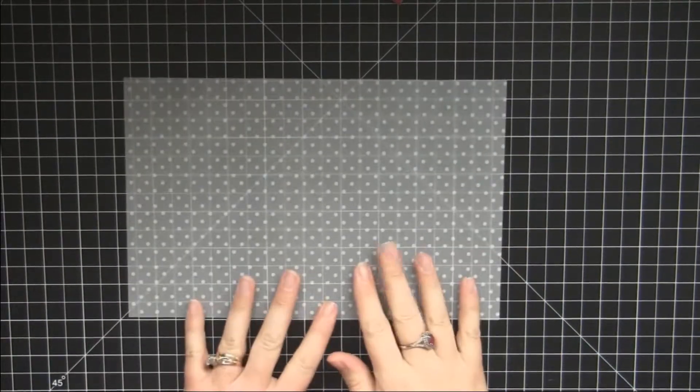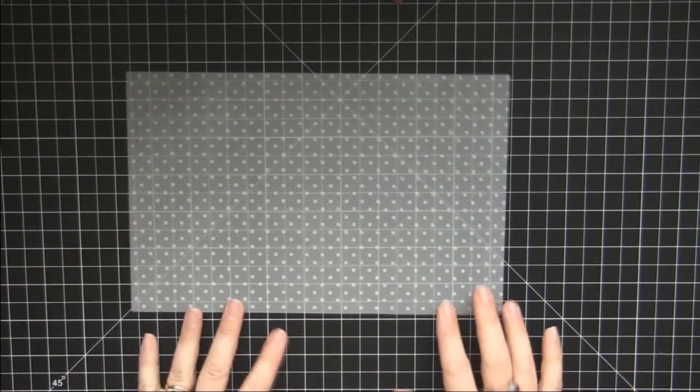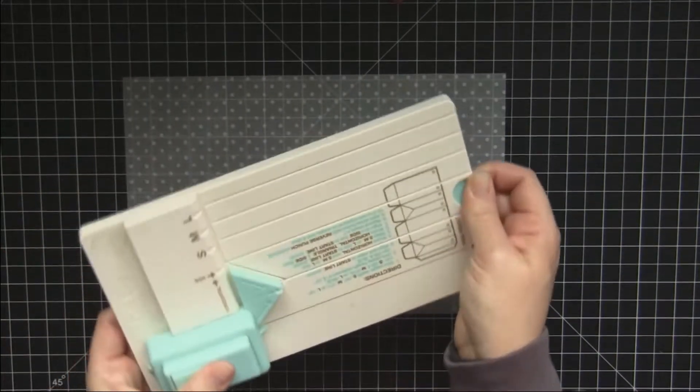So what I'm going to start with is a six and a half by ten inch piece of vellum, and I'm going to be using my We Are Memory Keepers gift bag punch board.